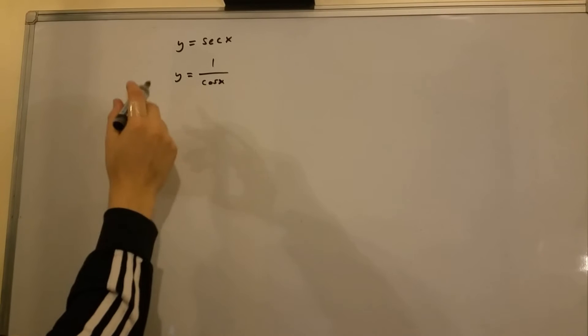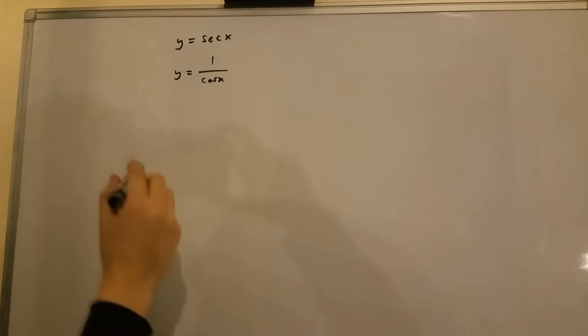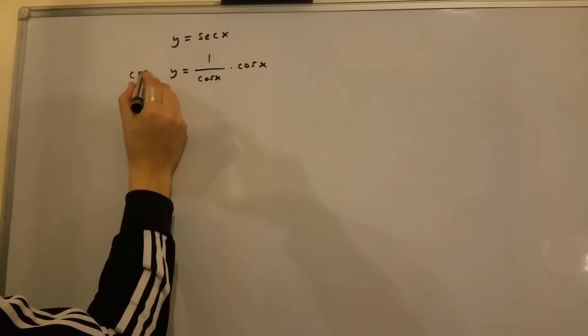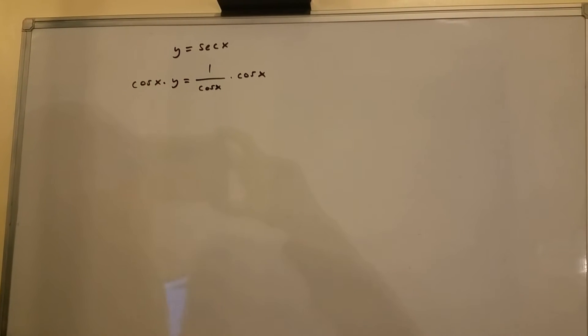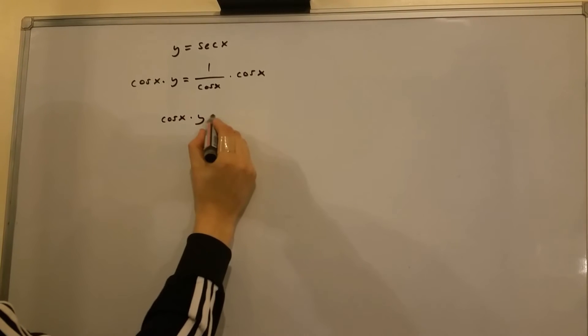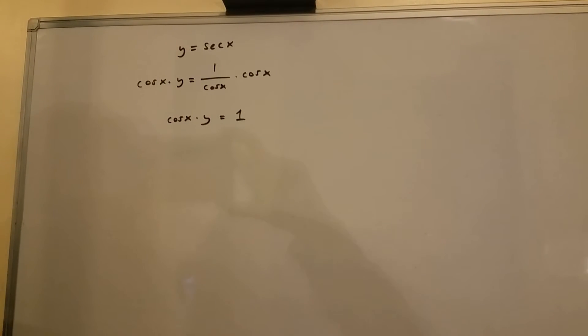Next we're going to multiply both sides of this equation by cos x. If we do this we're going to have cos x multiplied by y equals 1.